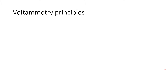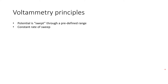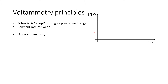The principles of voltammetry are fairly simple. Potential is swept through a predefined range at a constant rate of sweep. With linear voltammetry, we increase the potential at a constant rate — we allow the cell to equilibrate for a time period, then ramp up the potential at a constant rate and look at what happens to the current.